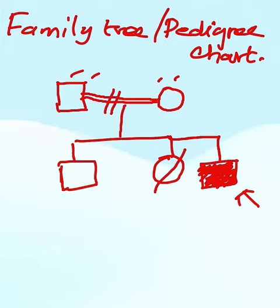When you strike out the circle or square, it means that the person is deceased. In between, if there is any abortion, you can indicate it by a triangle.